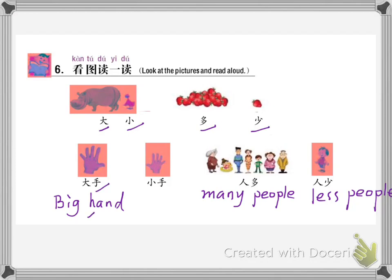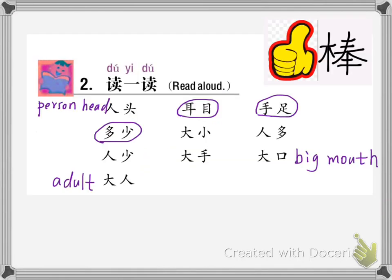大手 — big hand. 小手 — little hand. 人多 — many people. 人少 — less people. Let's read again! 大手 — big hand. 大口 — big mouth. 大人 — adult. We will learn more about 多, 手, 支, 主 in the future video.